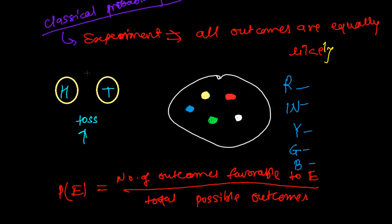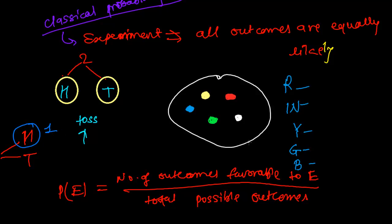Just like tossing a coin: in this experiment, when I toss a coin I may get head or I may get tail. If I need to find out the probability of getting head, then the favorable outcomes to head is only one, because tossing a coin gives two total outcomes.